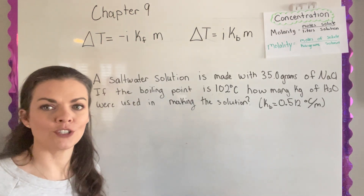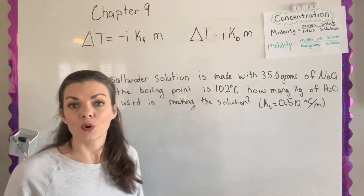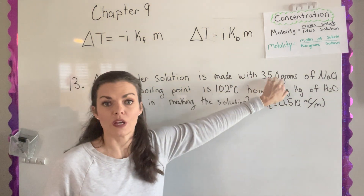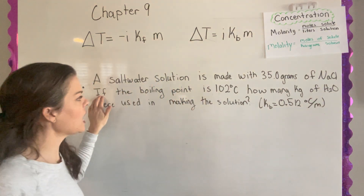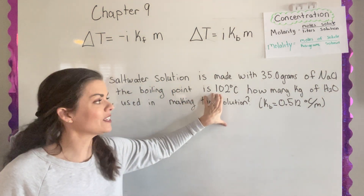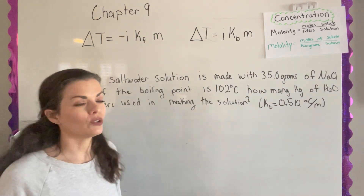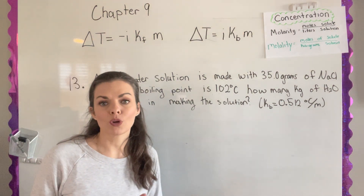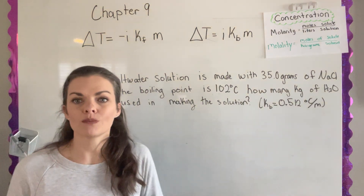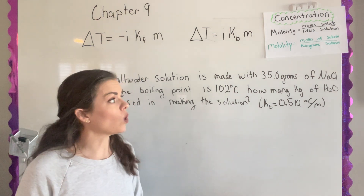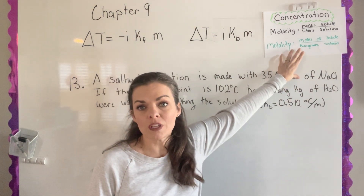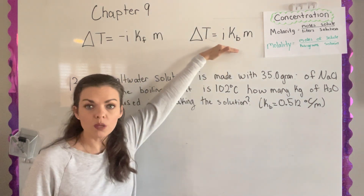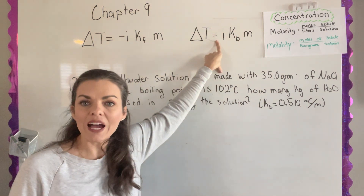The last problem of the chapter 9 comprehension check is similar but uses boiling point. The question says a saltwater solution is made with 35 grams of NaCl — table salt — and the boiling point is 102 degrees Celsius. How many kilograms of water was used in making the solution? So I know how much salt I have and I know the temperature; I need to calculate kilograms of water, which will come from the molality equation.